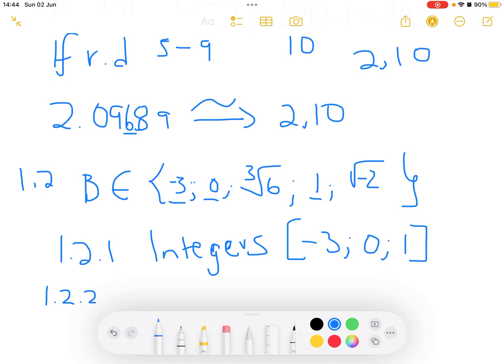In 1.2.2, we're looking for natural numbers. Natural numbers are positive integers that start at 1. So if you're counting, it's 1, 2, 3, 4, all the way up to positive infinity. The only one that I see here from this set is only the 1 itself.